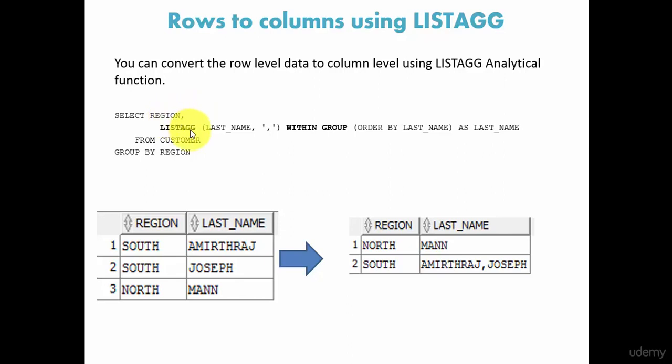So within the group region, display all the last names separated by comma, and when displaying the values, order by last name. That's all. You're just mentioning: list all values from the column LAST_NAME separated by comma within the group region, and order the values by last name.